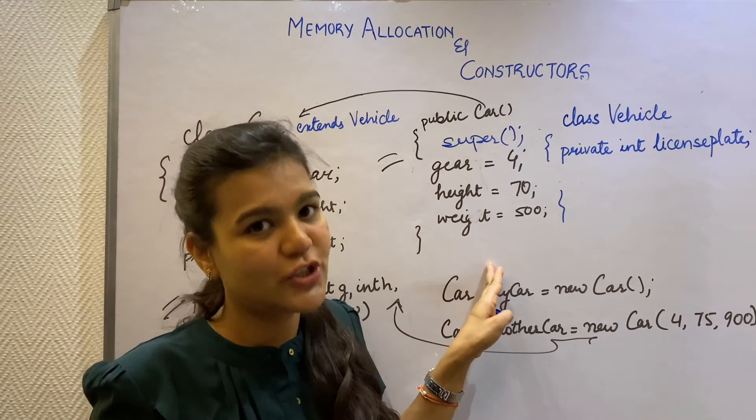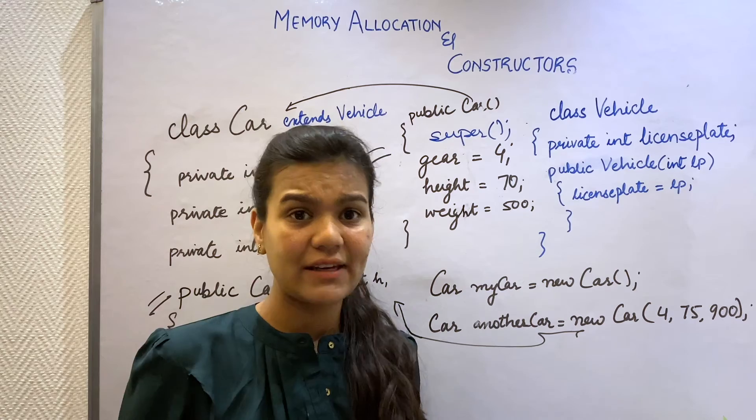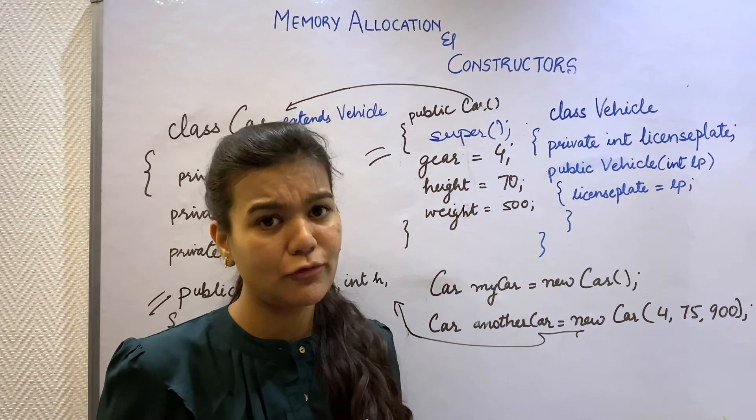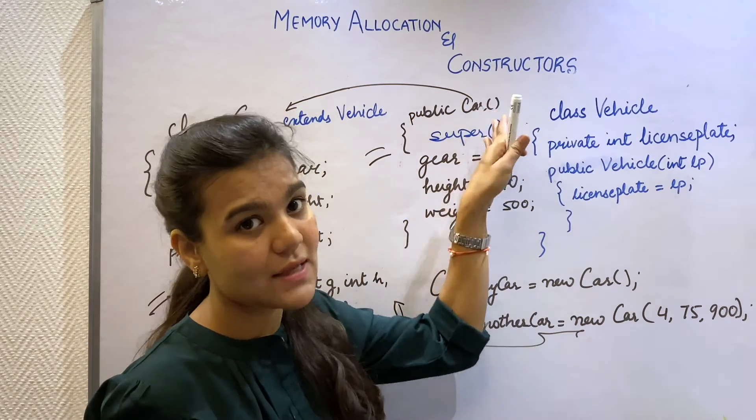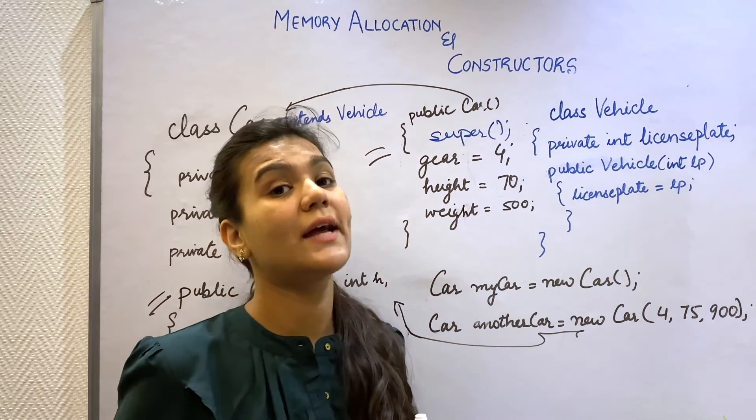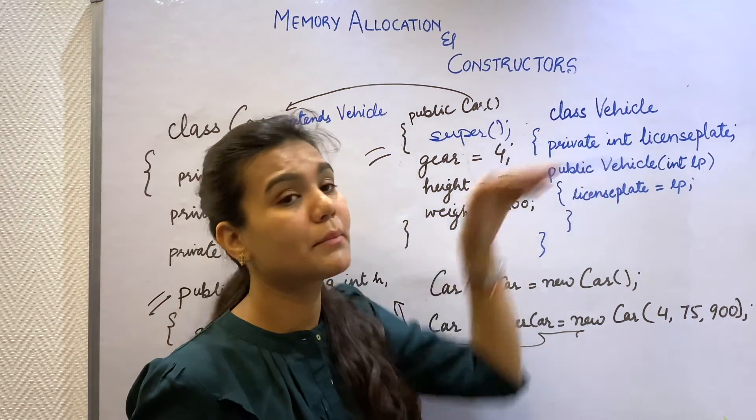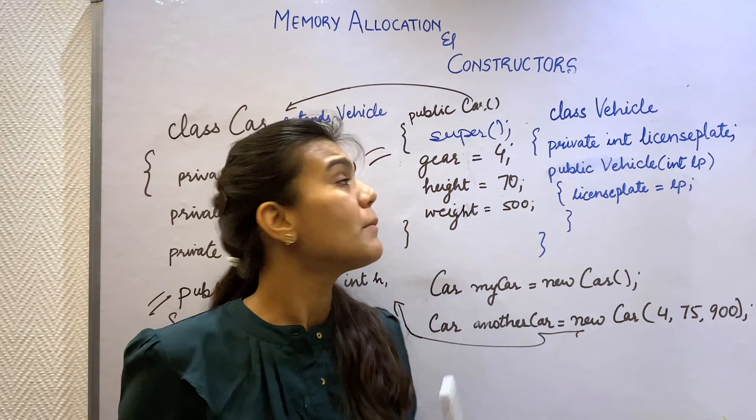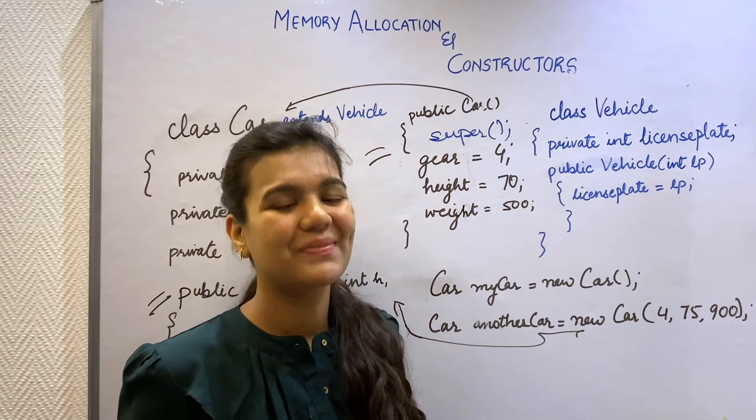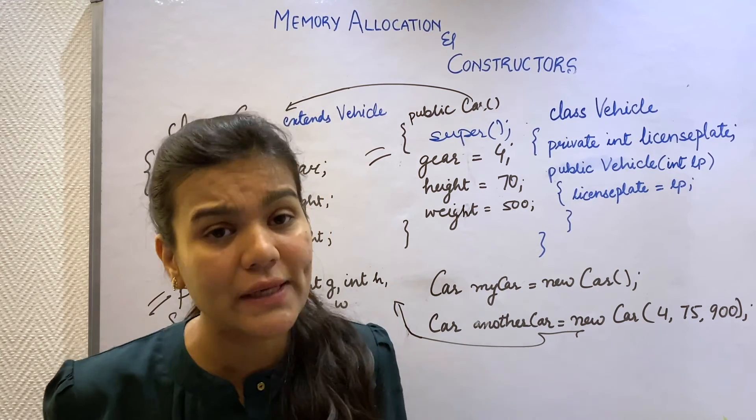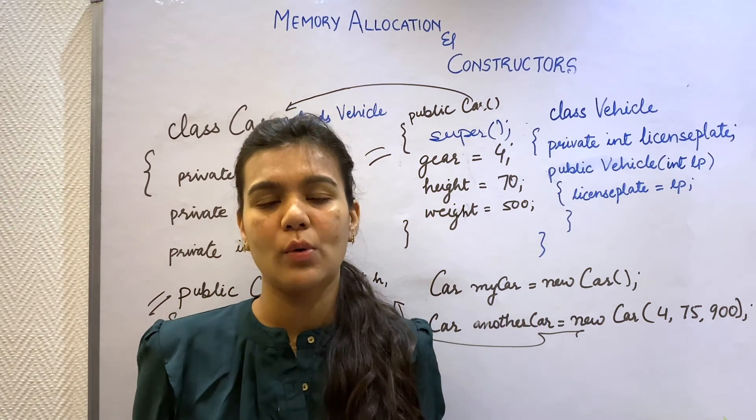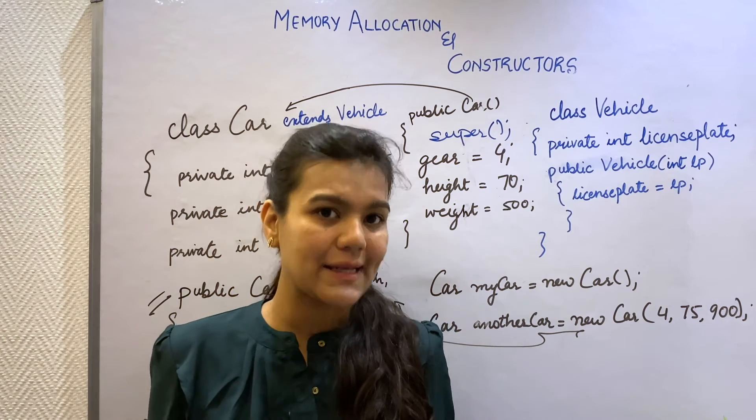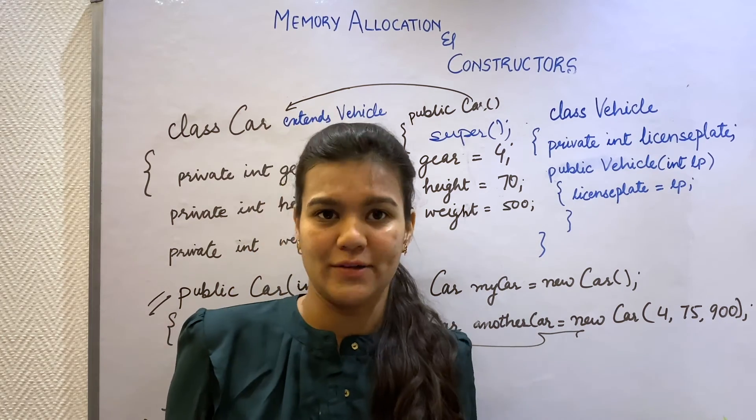This is called constructor chaining. So when I create my car class object, the first constructor that gets invoked is of my car class. But the first constructor that finishes is of my vehicle class because I need a fully formed vehicle object before my fully formed car object. Let that sink in because it's very important. Similar to how the child cannot exist before its parents, a child object cannot exist before its parent object.